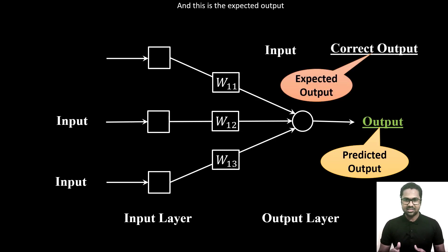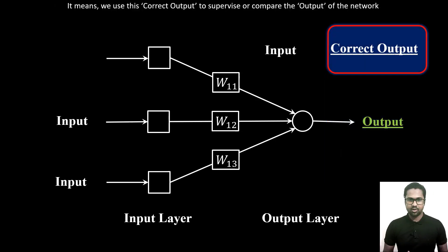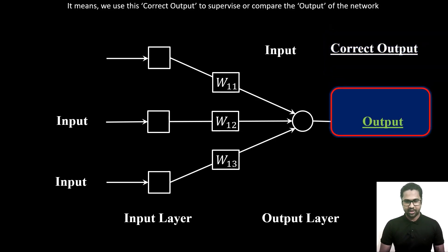And this is the expected output. When the predicted output is equal to the correct output, we say the prediction is 100% accurate. It means we use this correct output to supervise or compare the output of the network.